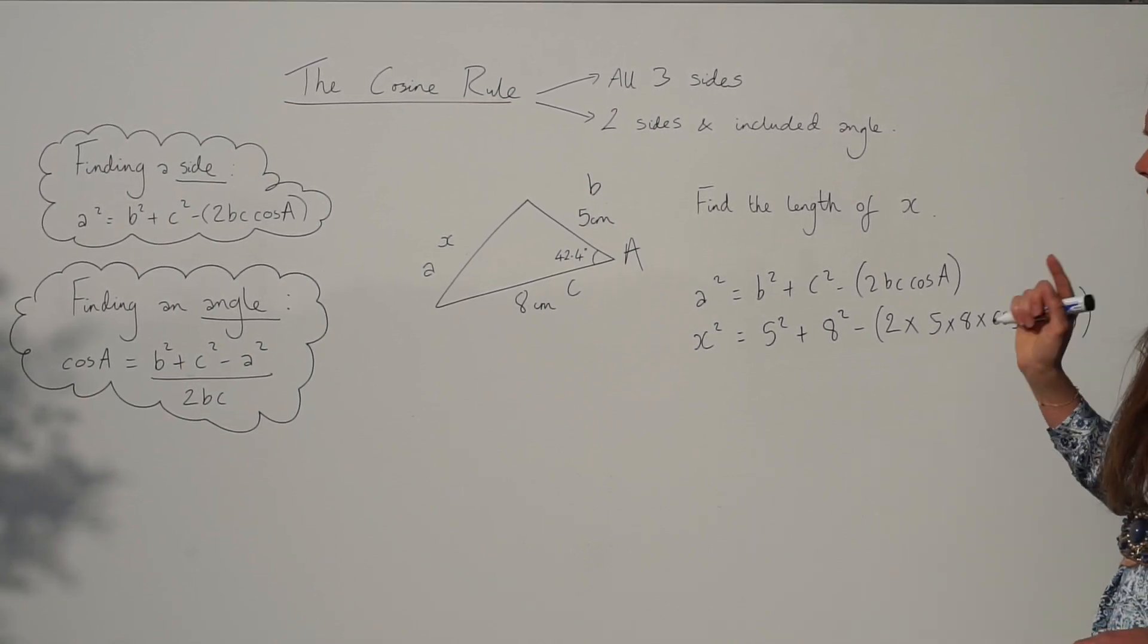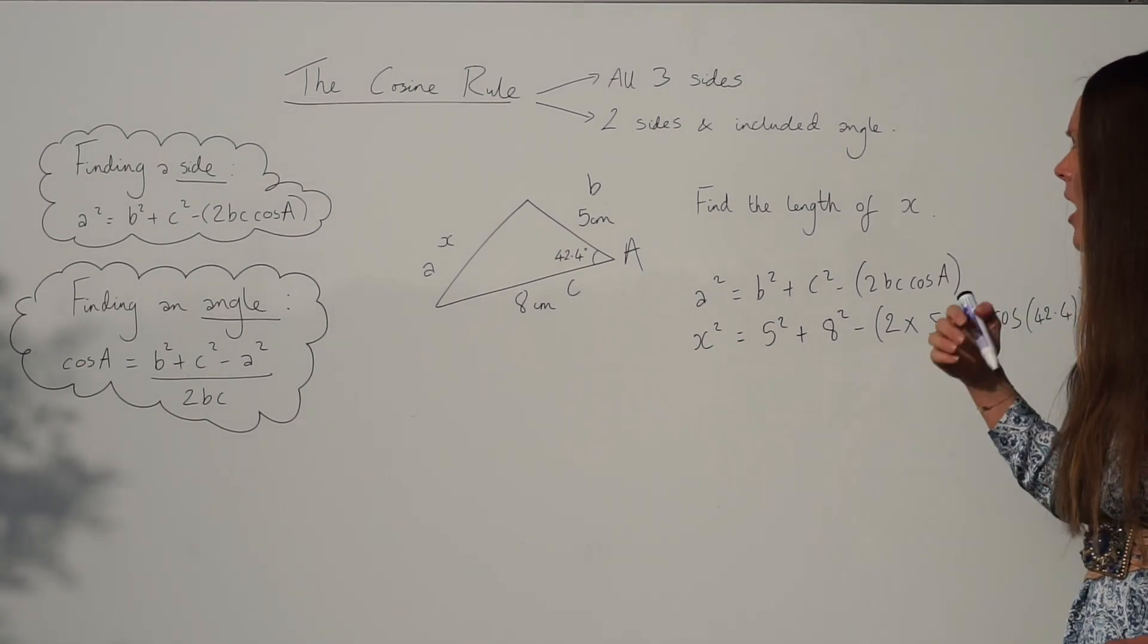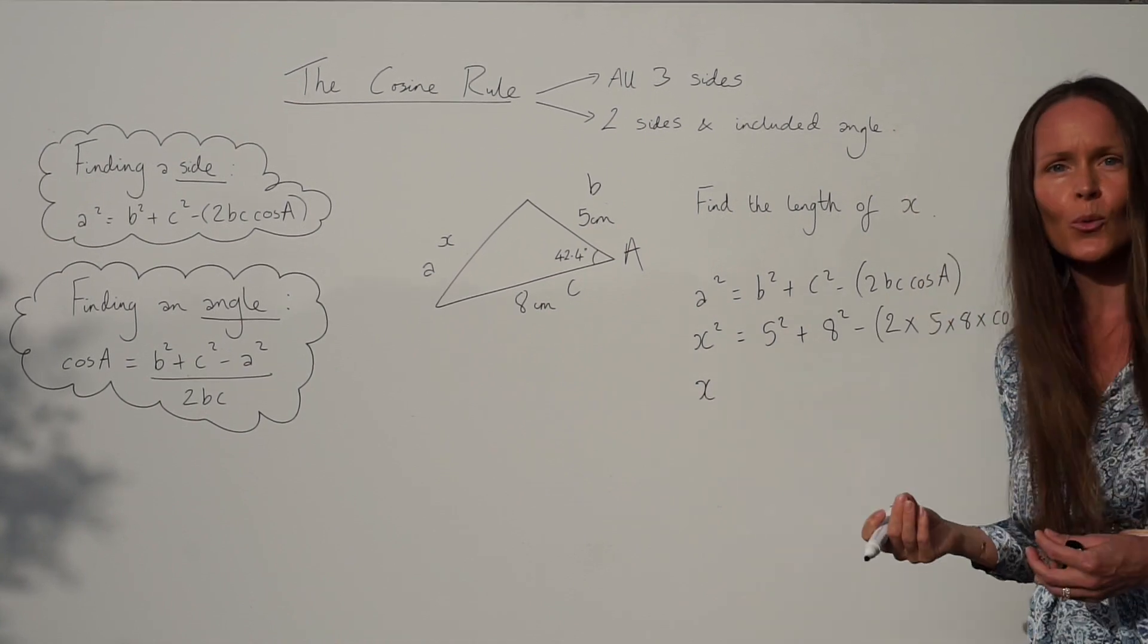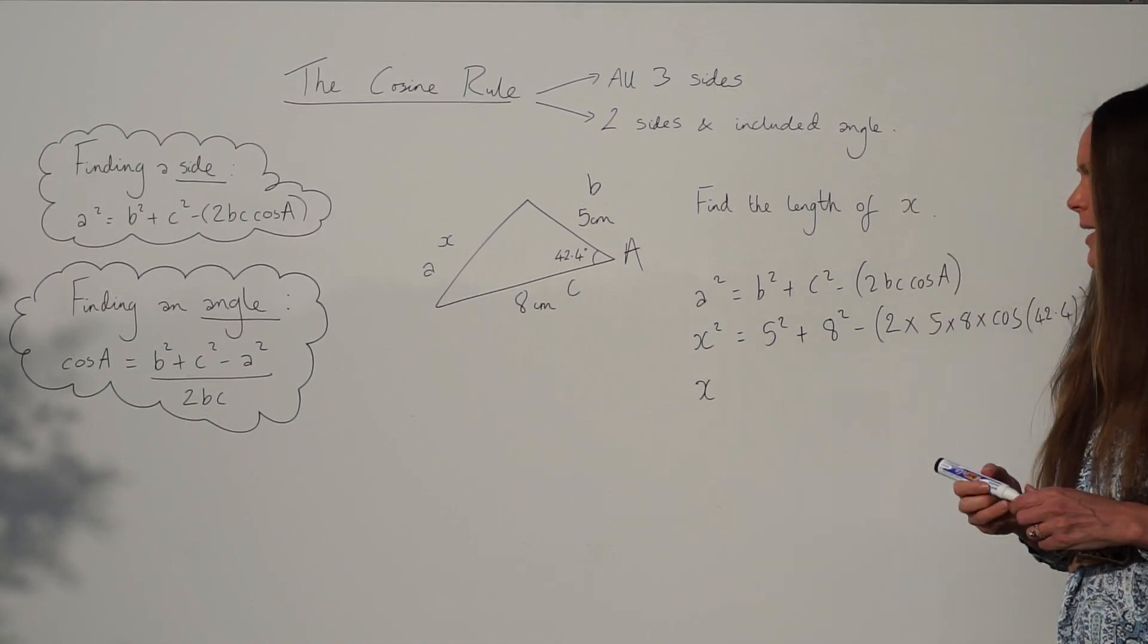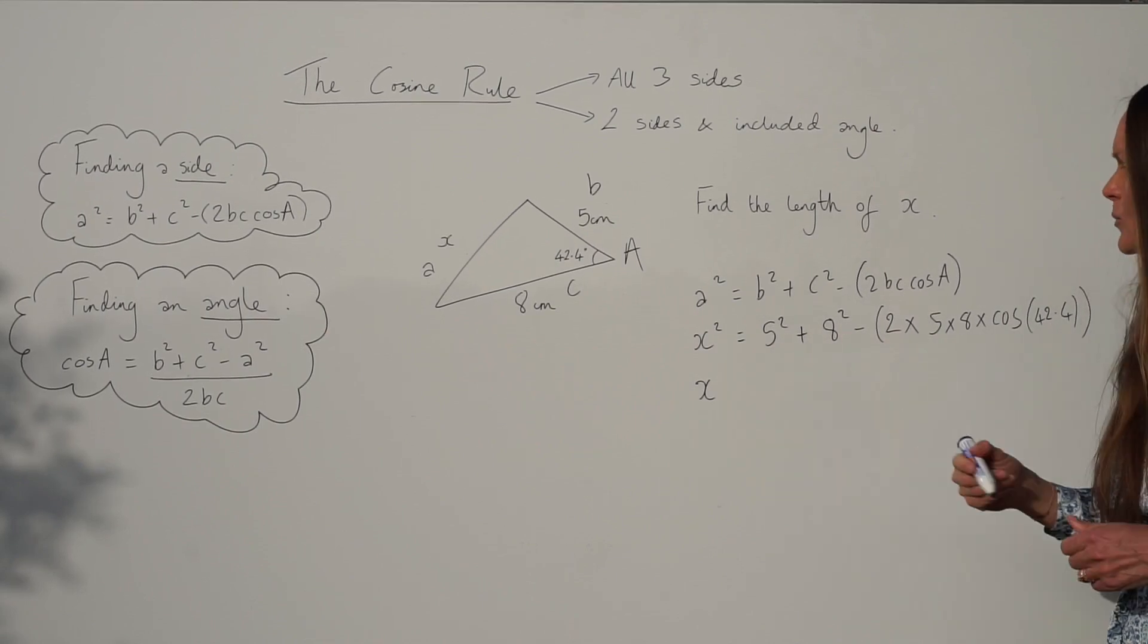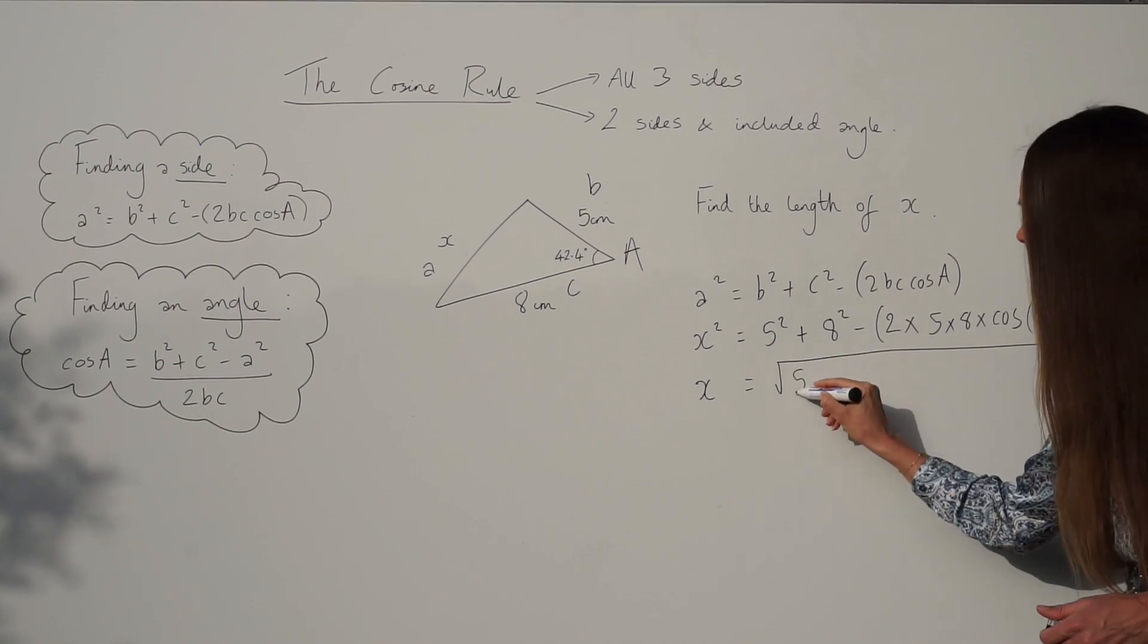Okay, next what I need to do is get rid of this squared on the X. Okay, I want to find the length of X. So to do that I just need to square root both sides of the equation. So when I square root the left hand side it gives me X which is what I need. And then I need to square root everything I wrote down previously.